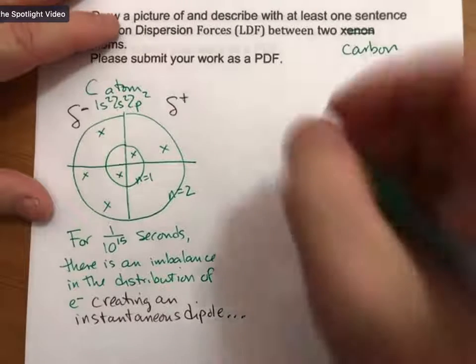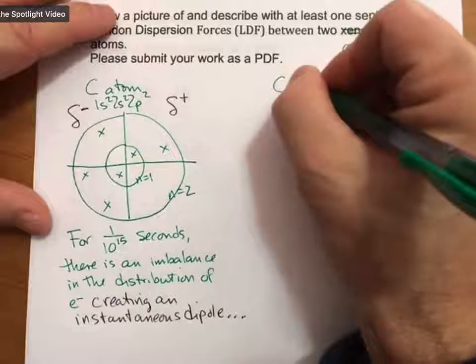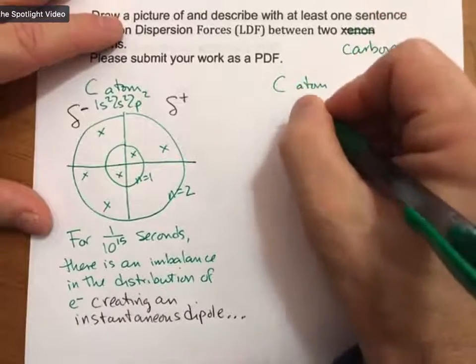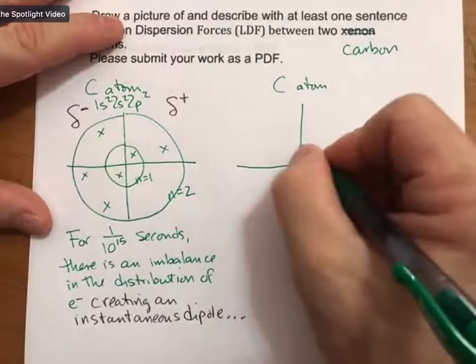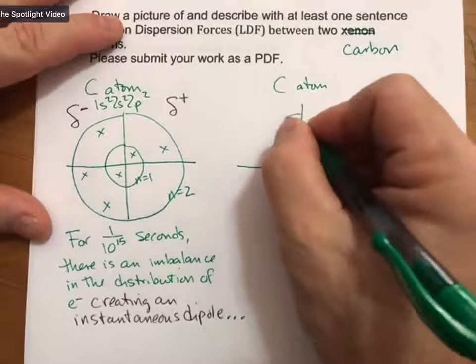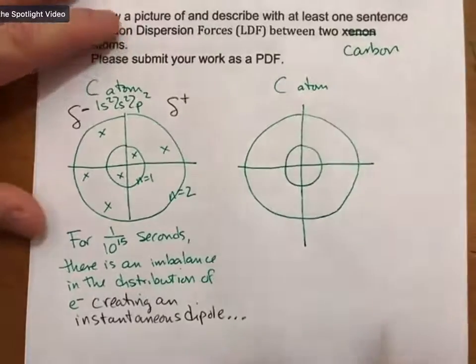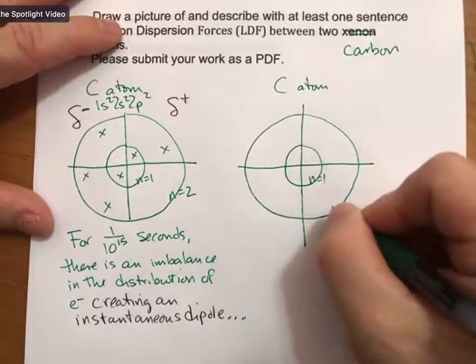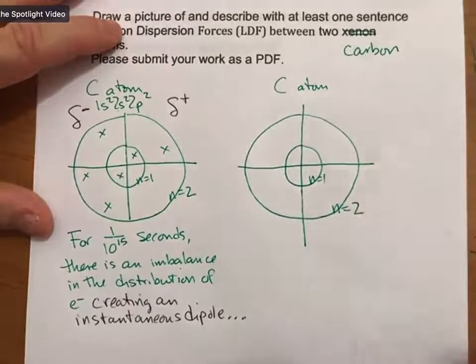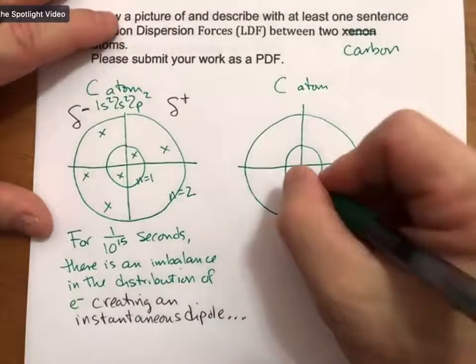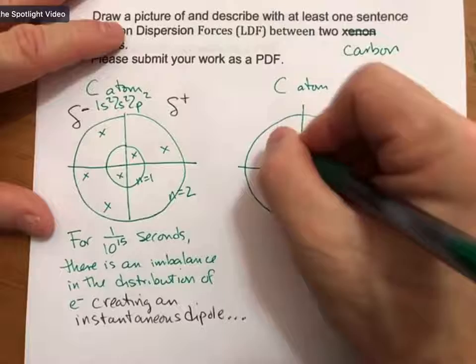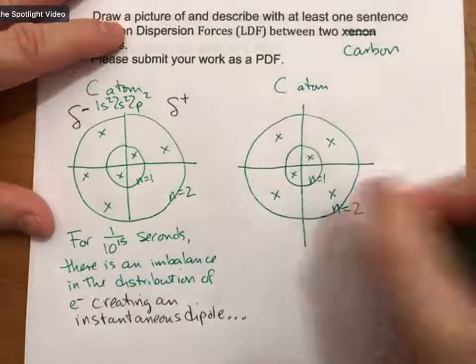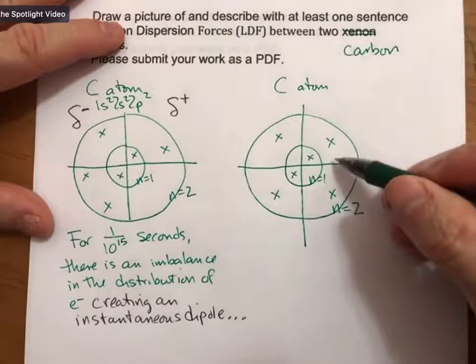And then over here we have another carbon atom. As much as possible, exactly the same as far as its shape. And let's say we have an even distribution of electrons.